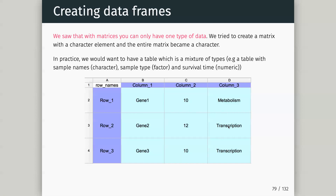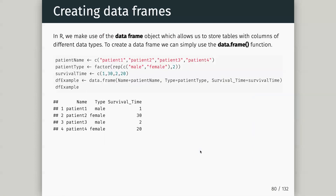In a data frame we might have a factor column, a character column for gene names, and a numeric column. In R we can make use of a data frame object which allows us to store tables with columns of different data types. Data frames usually hold metadata — this sample has this numeric value, this category, this gene name. Matrices typically hold our numeric output from an assay.